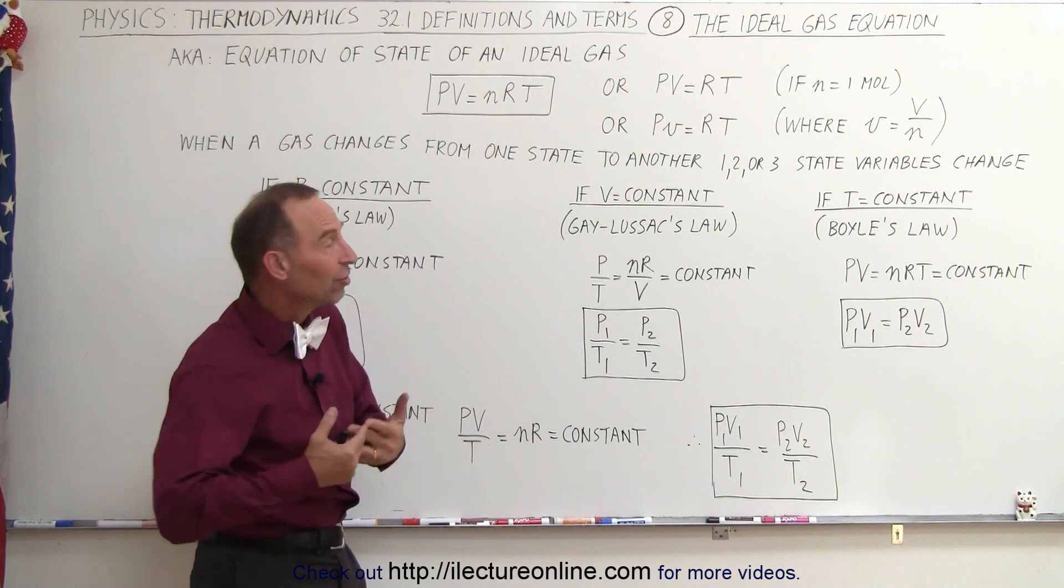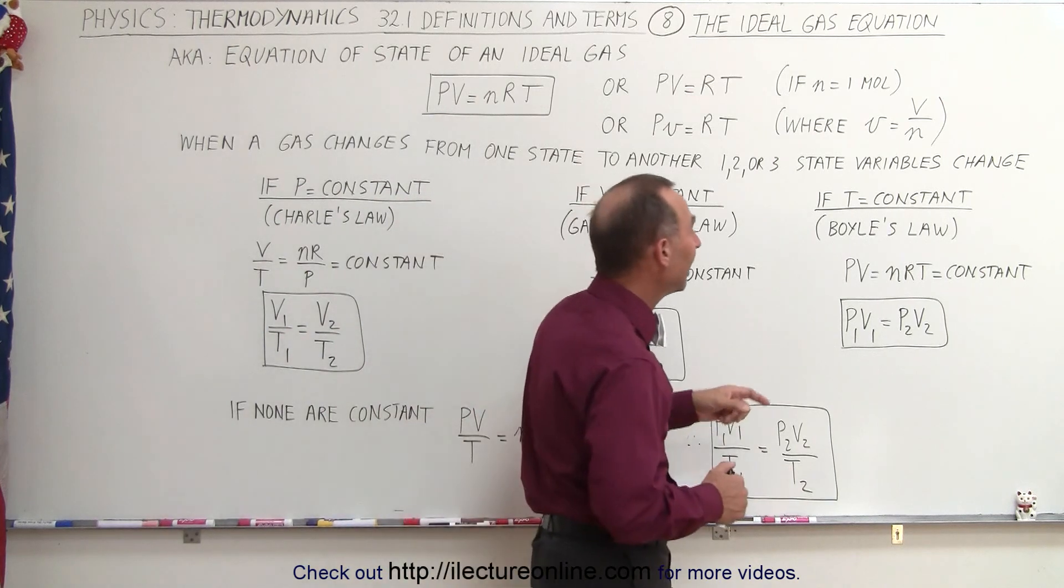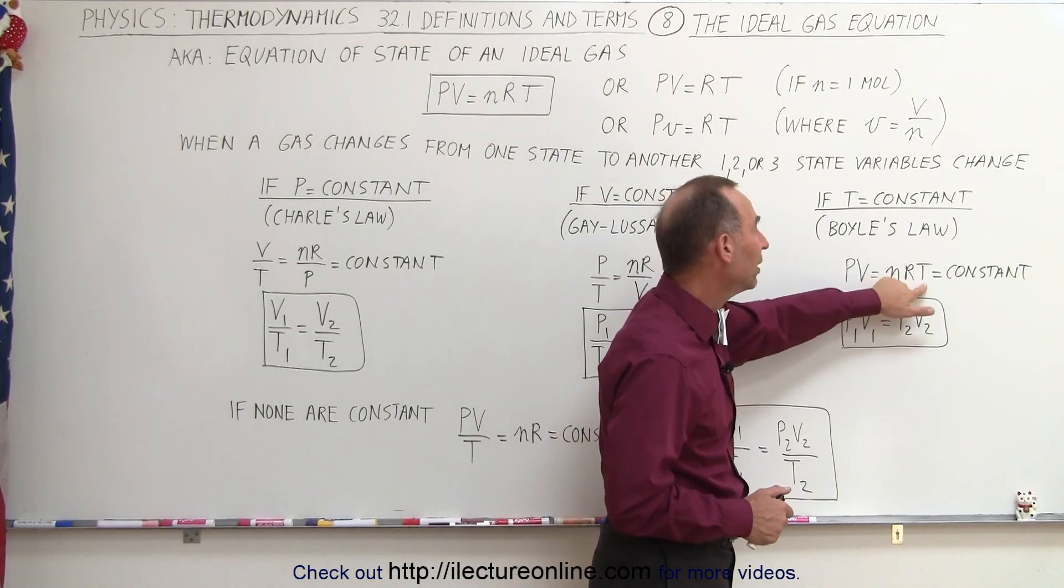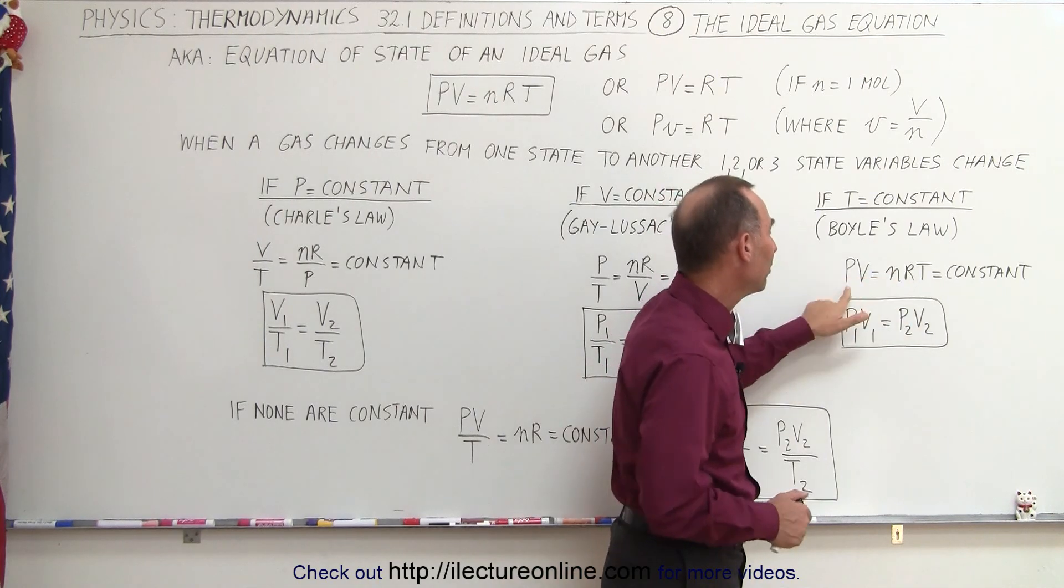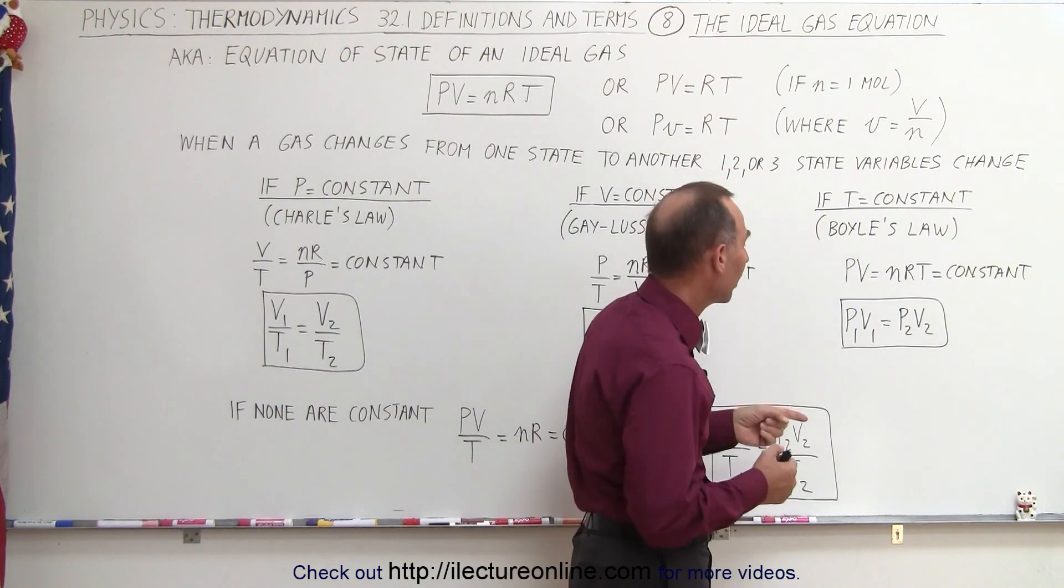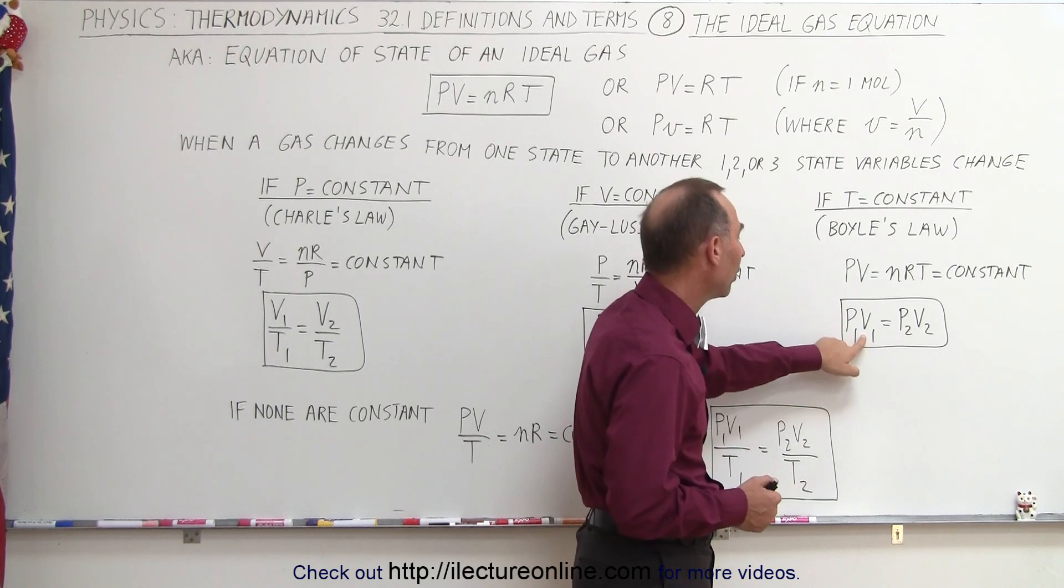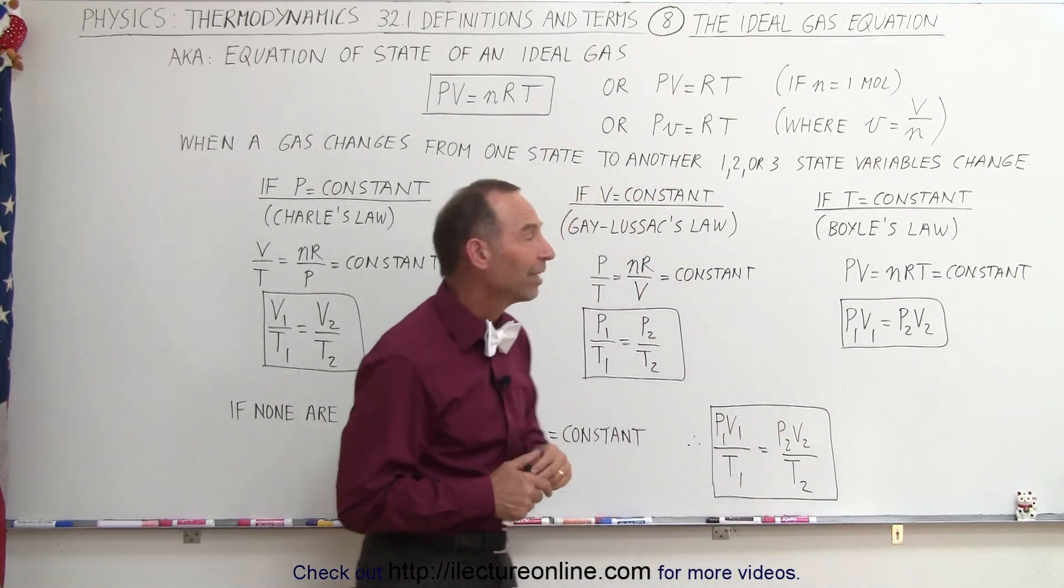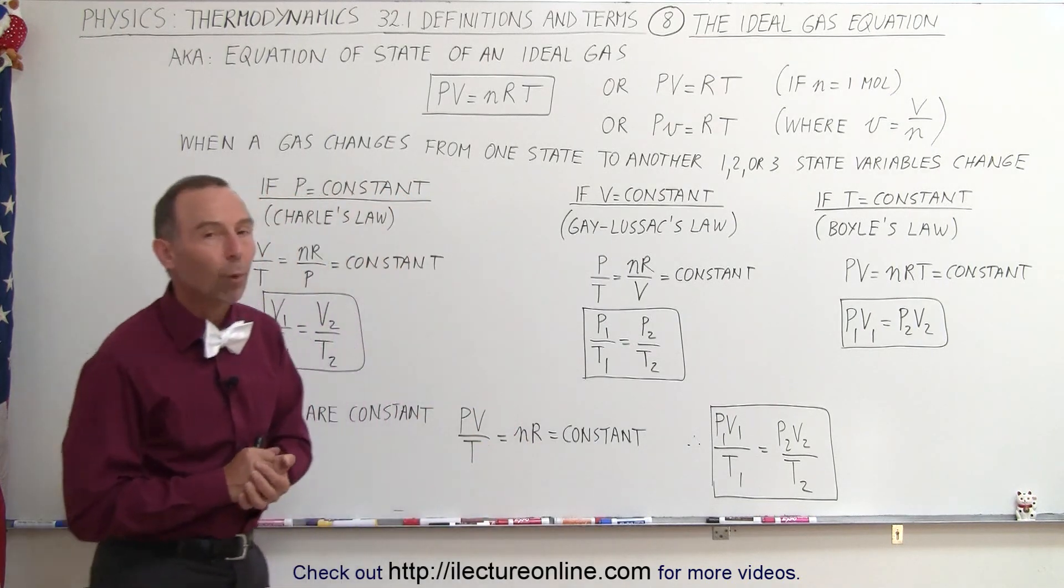And finally, if the temperature remains constant, then we can say that PV equals nRT. Since n, R, and T now all are three constant, P times V is a constant, and we can write that the product of the pressure and the volume in state one is equal to the product of the pressure with the volume of state two. And that is known as Boyle's law.